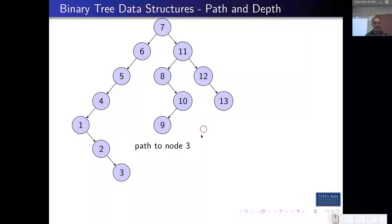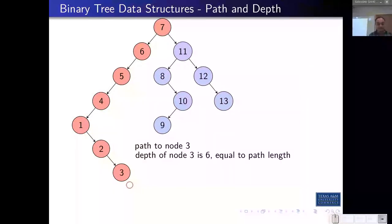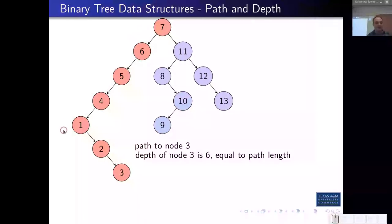Some more nomenclature: any node that doesn't have any children is a leaf node. In the tree we built, there were only three leaf nodes: 3, 9, and 13. Everything else is an internal node — anything that has one or two children in a binary tree. We can also talk about the path. These make good questions on quizzes and tests. The path to a node is the list of what you have to traverse to get to it. The path to 3, starting at the root, is 7 → 6 → 5 → 4 → 1 → 2 → 3. The depth of that node equals 6 — you follow 6 links from the root.